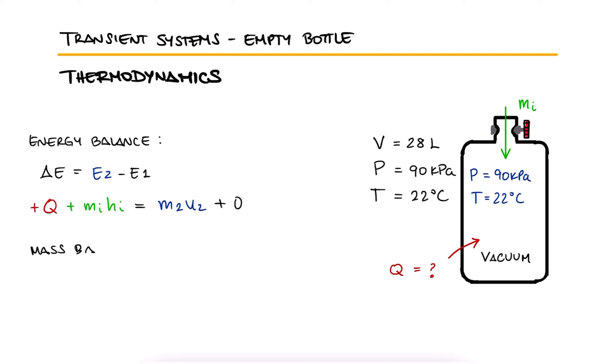Additionally, from the mass balance equation, we see that the mass coming in is equal to the final mass since there was no mass at the beginning. So we can substitute this in the energy equation and factor the mass out on the right-hand side. This means that to quantify the heat that was transferred, we have to calculate the mass and look up the specific enthalpy and specific internal energy.